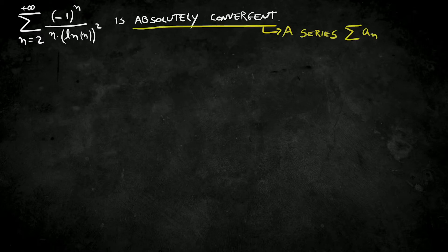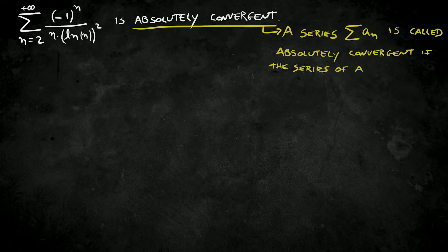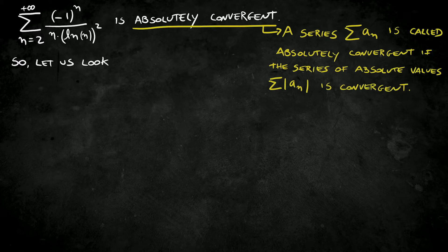Wait, a series aₙ is called absolutely convergent if the series of the absolute values is convergent. Okay, great.